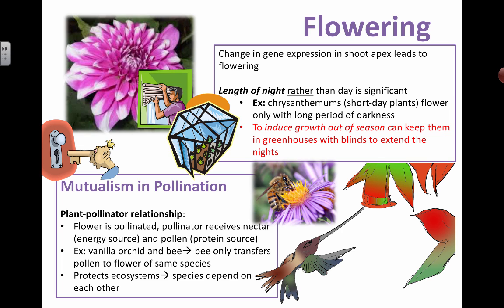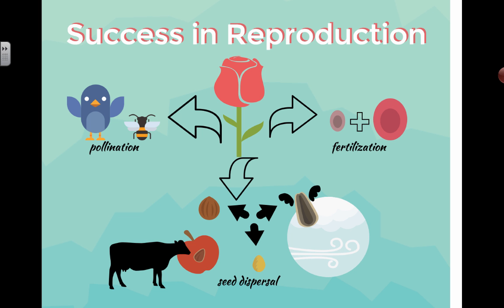Mutualism and pollination are important concepts for understanding how plants can continue to survive. Success in reproduction basically depends on three things: pollination by birds and bees, fertilization — when the male gamete in the pollen actually meets the female gamete — and seed dispersal. When those gametes meet, you develop a zygote and you're making baby plants, and those baby plants need to be sent off.